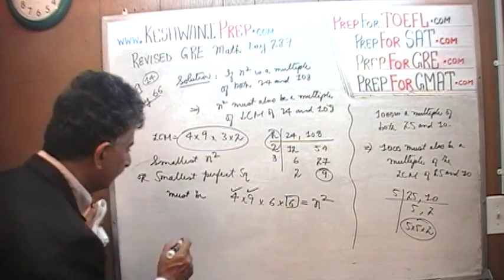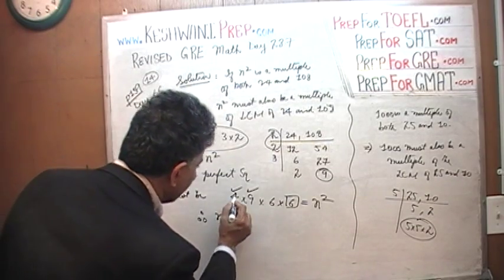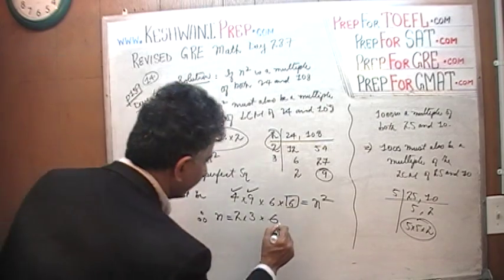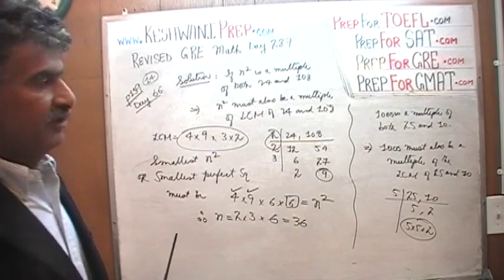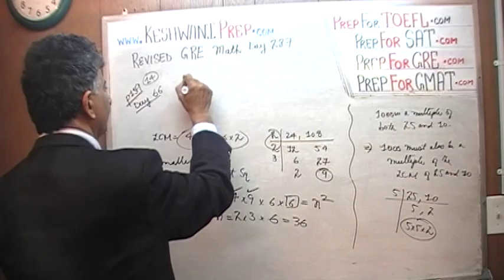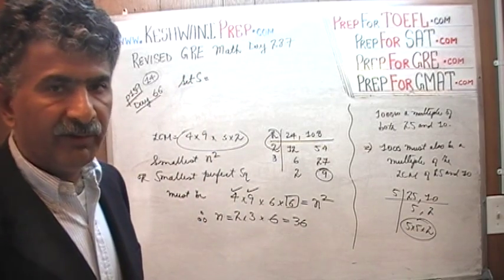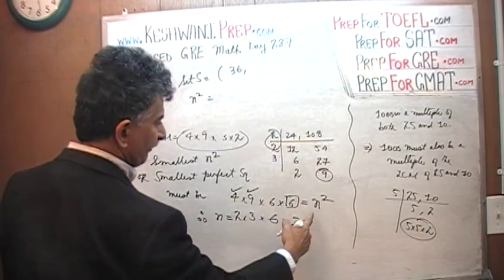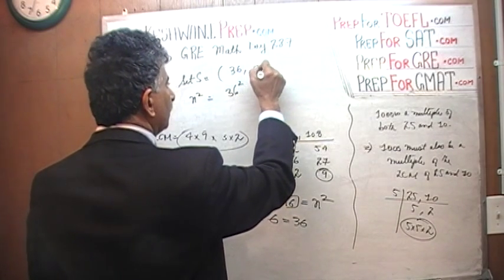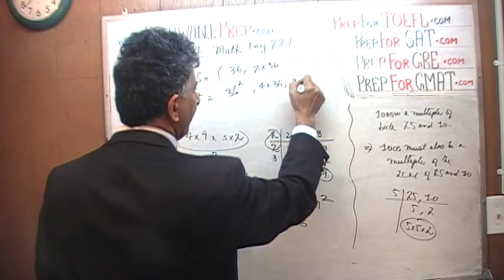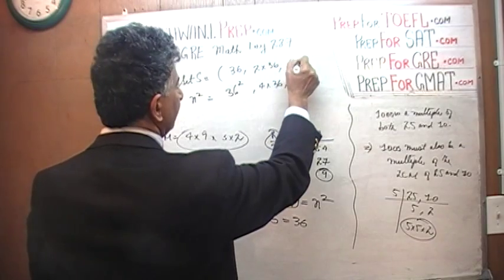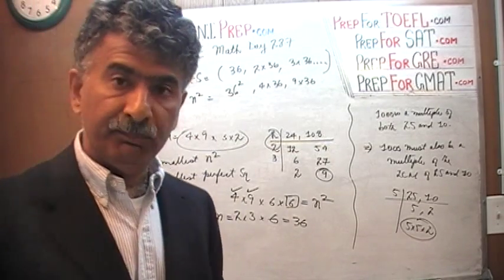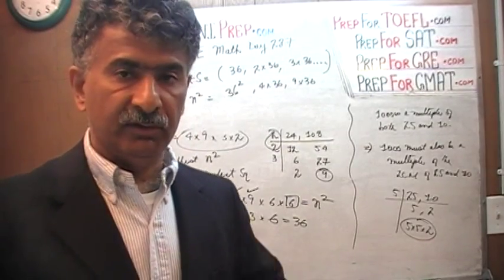The very first element that qualifies to be a member of set S is 36. So the elements of set S are simply multiples of 36: 1×36, 2×36, 3×36, 4×36, and so on and so forth — forever. We have just located all the elements that belong to set S.